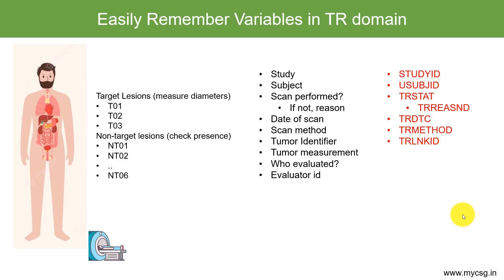For the tumor measurement — whether it is the diameter or a present/absent status — this result is stored in the original result variable TRORRES. If we standardize it, we use the variable TRSTRESC for the standard result in character format. For who evaluated the scan, while in the TU domain we used TUEVAL, here we use TREVAL, and the evaluator ID is stored in the TREVALID variable.